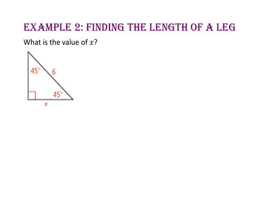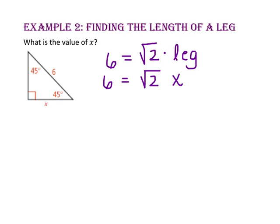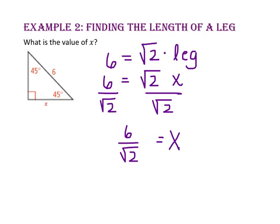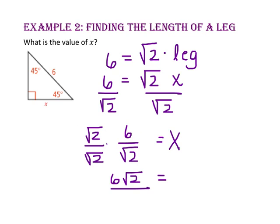In example 2, we will find the length of a leg. What is the value of x? In a 45-45-90 triangle, the length of the hypotenuse is the square root of 2 times the length of the leg. Since the length of the leg is x, we substitute that in and divide both sides by the square root of 2, giving x equals 6 over the square root of 2. Since we cannot have a radical in the denominator, we rationalize by multiplying by the square root of 2 over the square root of 2. The square root of 2 times 6 is 6 radical 2, and the square root of 2 times the square root of 2 is 2. Simplifying, 6 divided by 2 is 3, so x equals 3 times the square root of 2.